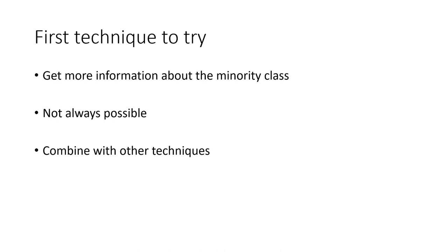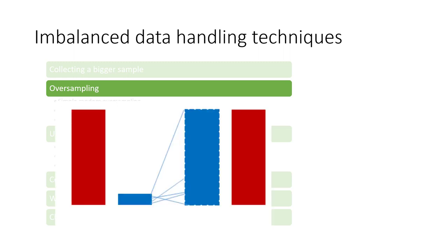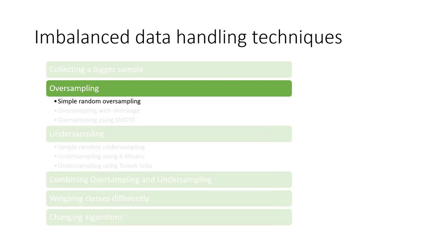When data has imbalanced categories, a natural thought is to balance it. We could either increase the number of the minority class or decrease the number of the majority class through resampling, which includes oversampling and undersampling. Oversampling adds examples of the minority class to balance the dataset. Most of the time, we increase the number of minority class examples to match the majority class. We'll cover three popular oversampling methods: simple random oversampling, oversampling with shrinkage, and SMOTE, which synthesizes new samples based on the minority class.